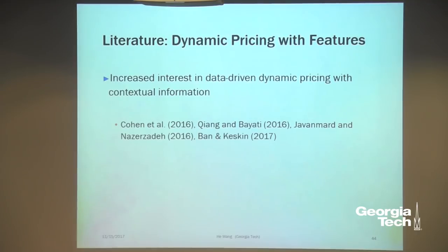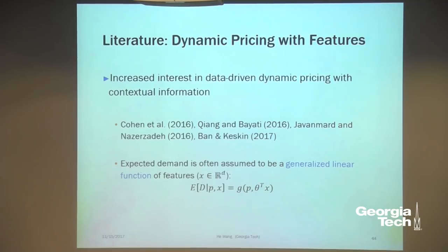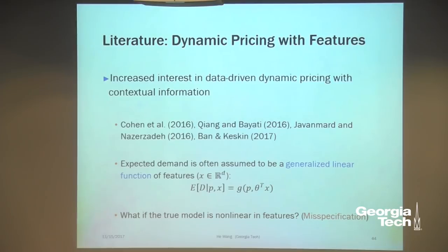Dynamic pricing with features has received a lot of attention in revenue management literature recently. But one thing we realized is that these papers typically assume demand is a linear function of features. If you have 51 different features — a vector of length 51 — these papers assume demand depends on a linear inner product of parameter theta times feature vector x. But in reality, features may capture very complex information about product characteristics and competitors, so the true model may not be linear. This motivates the question: what if we use a linear function but reality is not linear? This is misspecification.